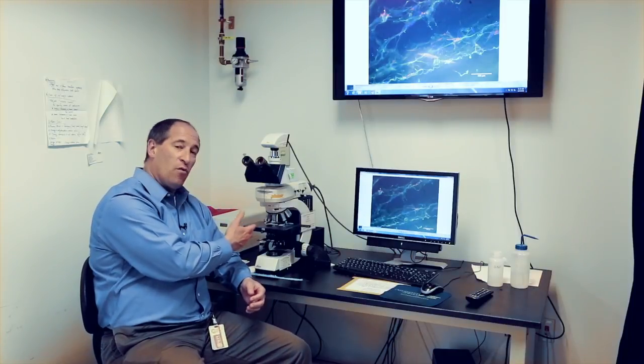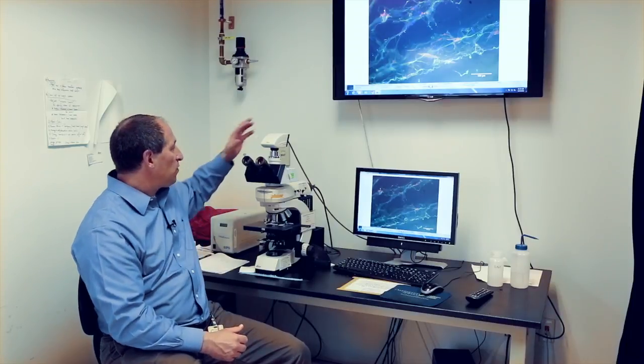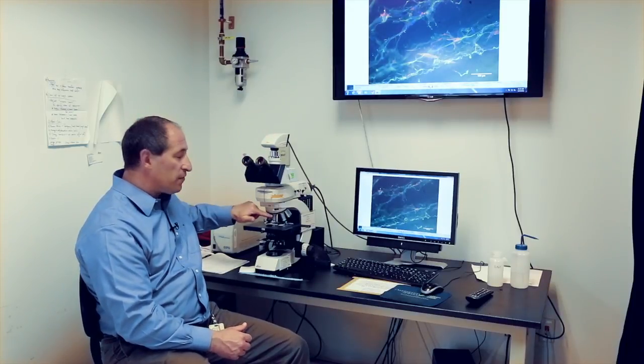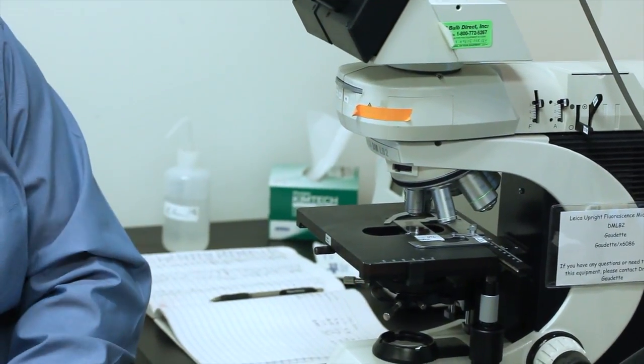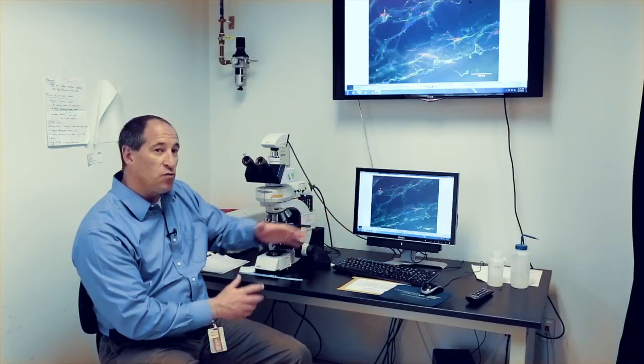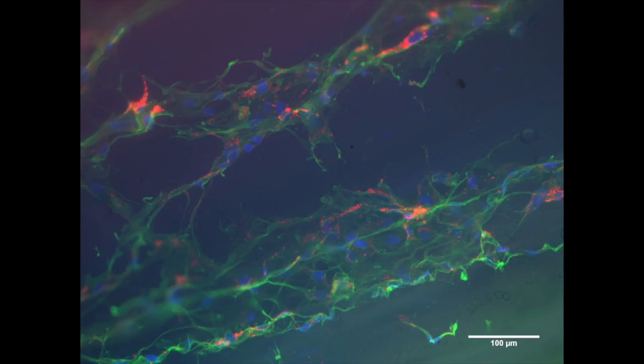After we've taken the tissue sections and stained them for different proteins like actinin, or looked at our quantum dot markers, we take them to the microscope. We take images with our camera system using different objectives—5x, 10x, or 20x. We image the green channel, red channel, and blue channel, then combine them together.